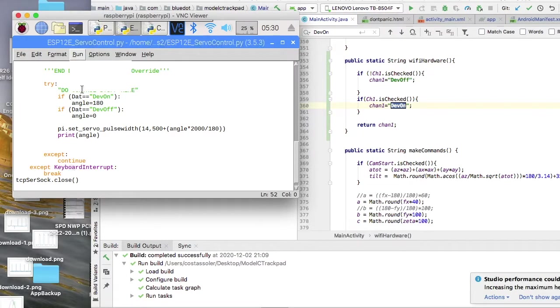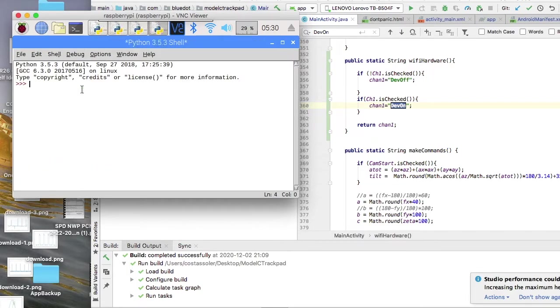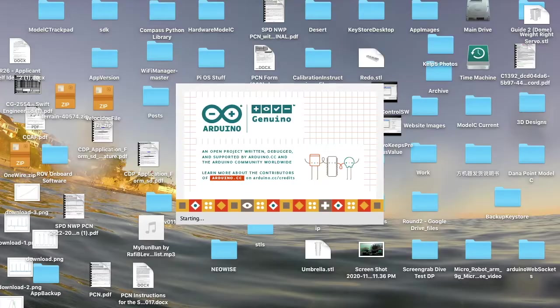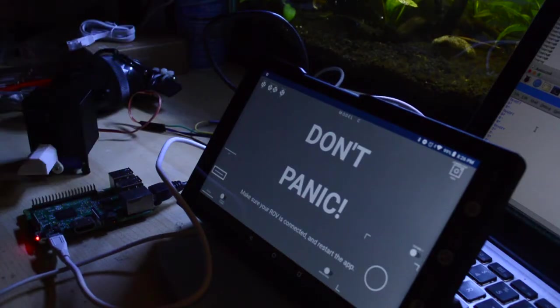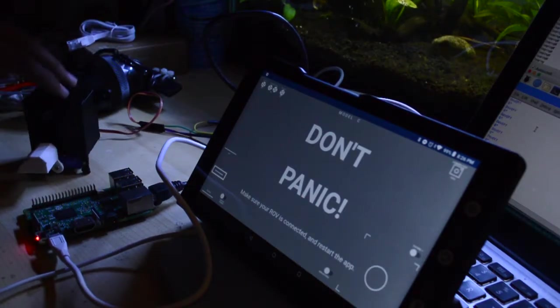Before wiring up the servo, I send a test message to the socket on the Raspberry Pi. And it looks promising. Next, I write and test the ESP12E socket using the Arduino IDE. With all that software out of the way, it's time for a dress rehearsal.